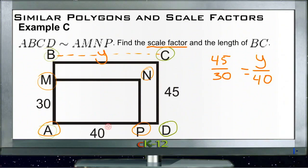And again, y on top because the 45 is and y is longer than 40 based on our shapes here. So now we can multiply diagonally: 30y equals 1600 and 5 times 40 is 1800. Divide both sides by 30, y equals 60.